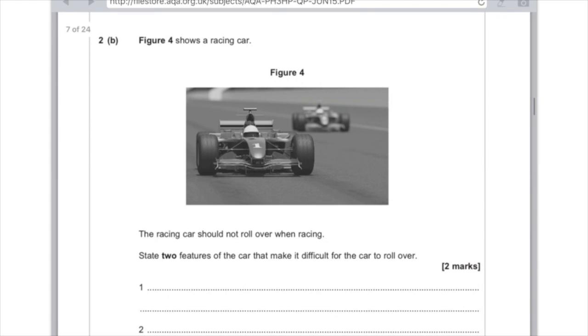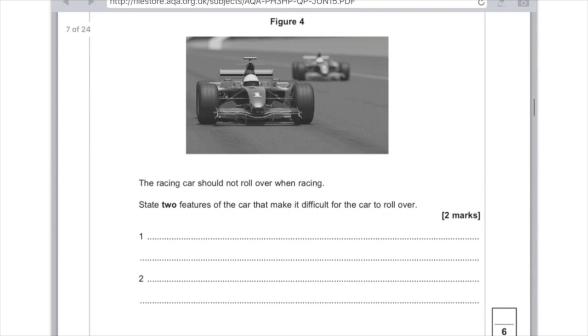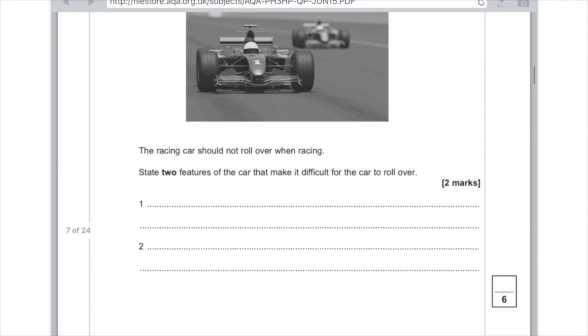2b. Figure 4 shows a racing car. The racing car should not roll over. When racing, state two features of the car that make it difficult for the car to roll over. Again, this question comes up. It's because it has a low centre of mass. As you can see, it's very, very close to the ground. And also, it has a very wide base, and that means it's going to be very unlikely that the car will topple over.